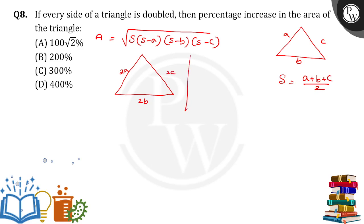So what is the value of S? S is equal to 2A plus 2B plus 2C divided by 2. So we will get the new S, that is S dash.